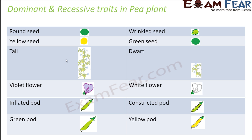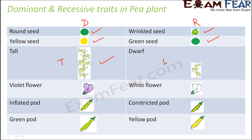Now let us look at the contrasting characters of the pea plant and identify which is the dominant trait in each. For seed shape, round is dominant and wrinkled is recessive. For seed color, yellow is dominant and green is recessive. For height, tall is dominant — denoted as capital T — and dwarf is recessive, denoted by small t. Round seed is capital R, wrinkled seed is small r. Yellow seed is capital Y and green seed is small y.